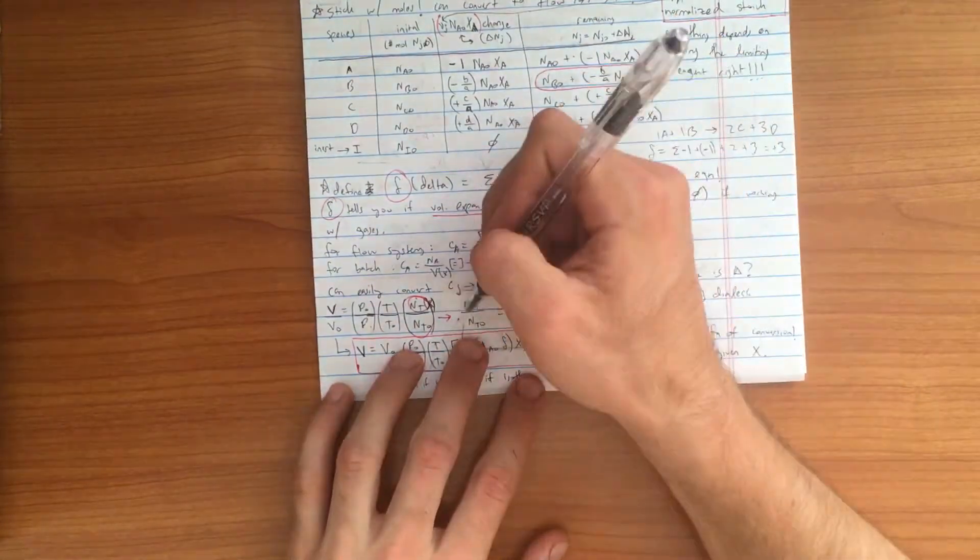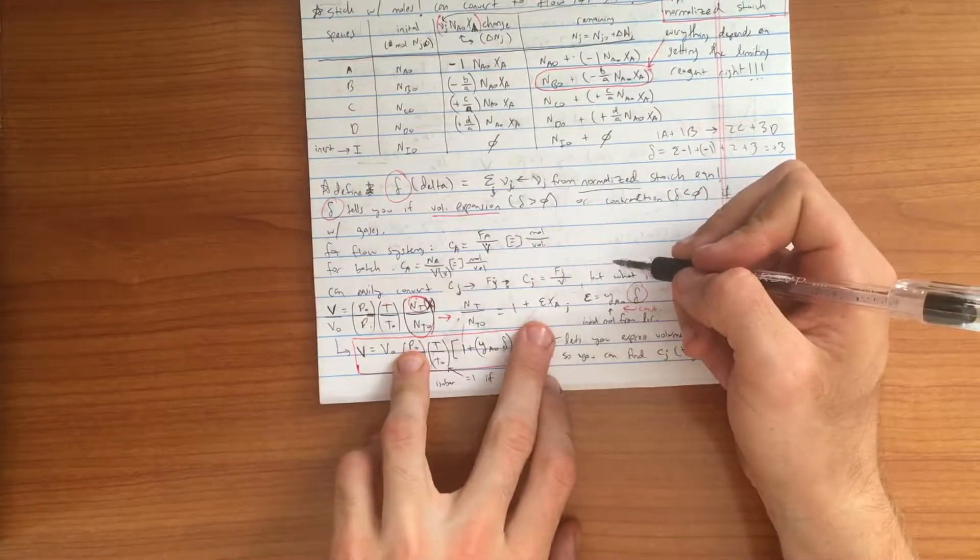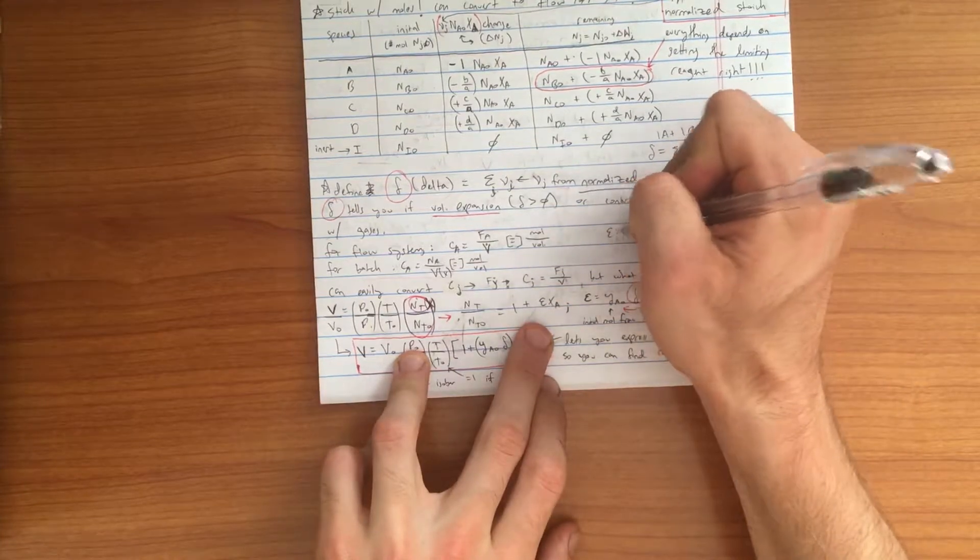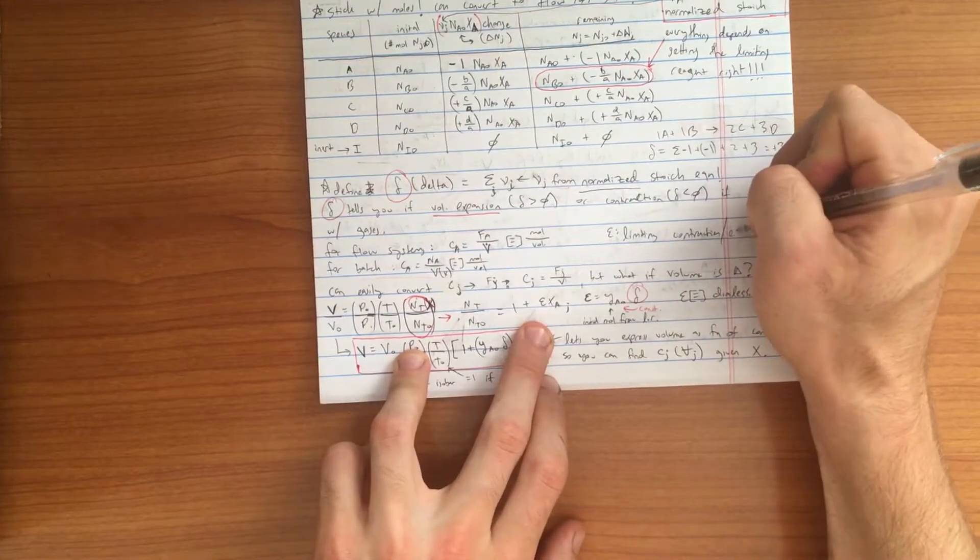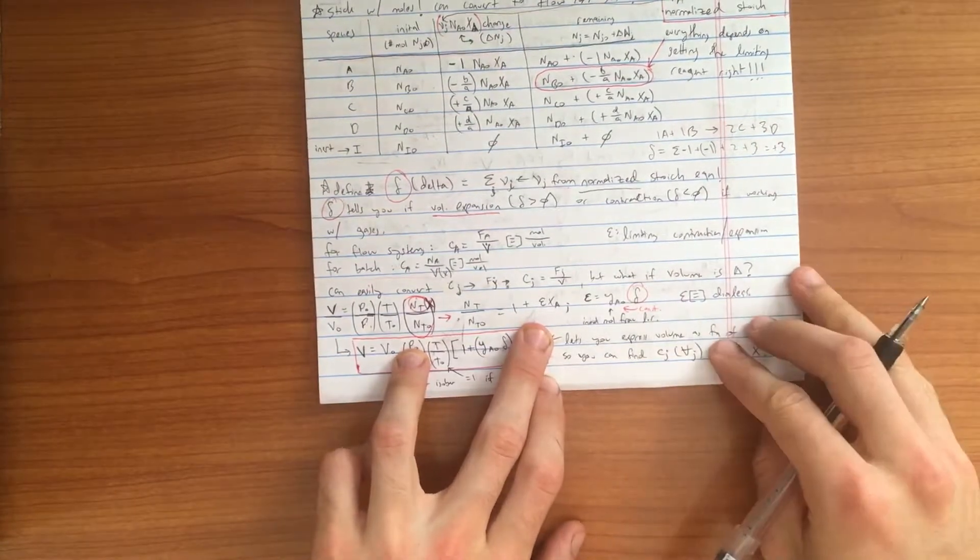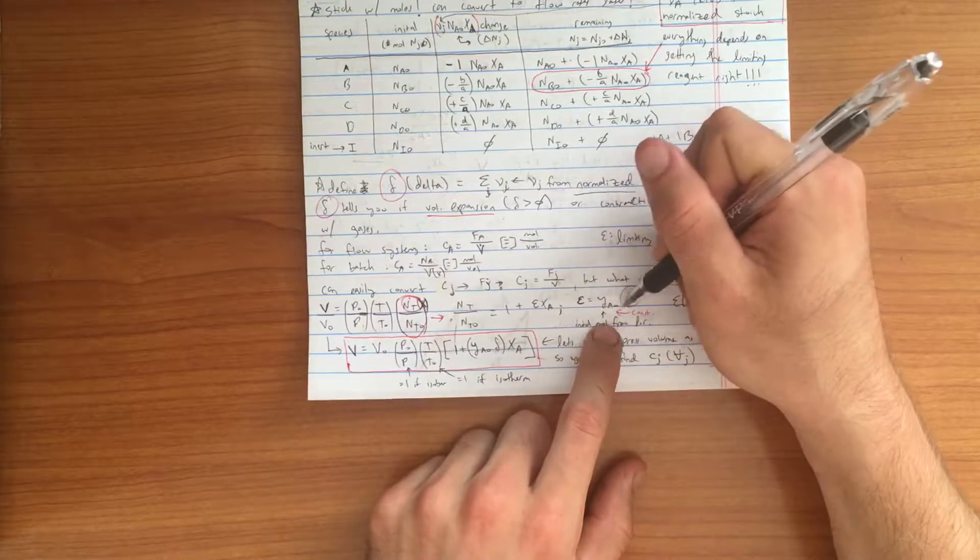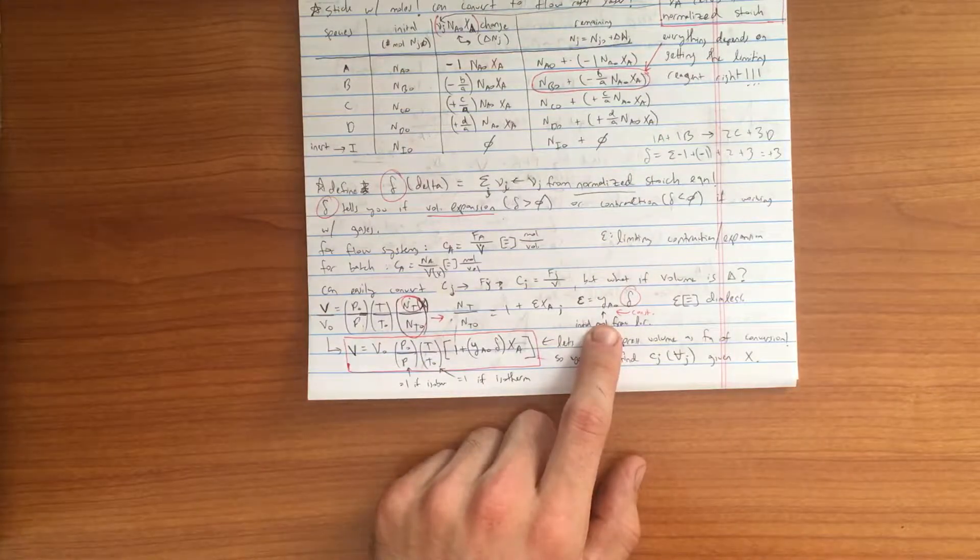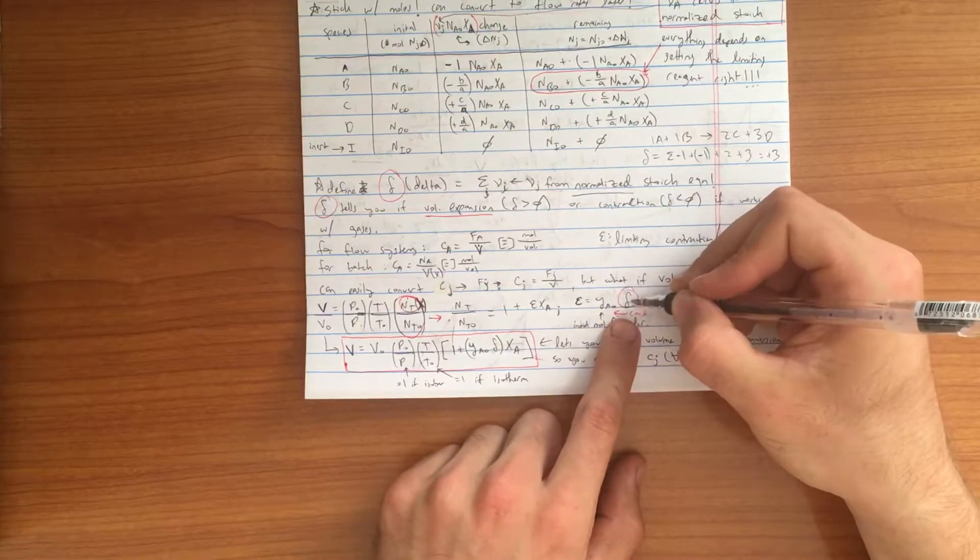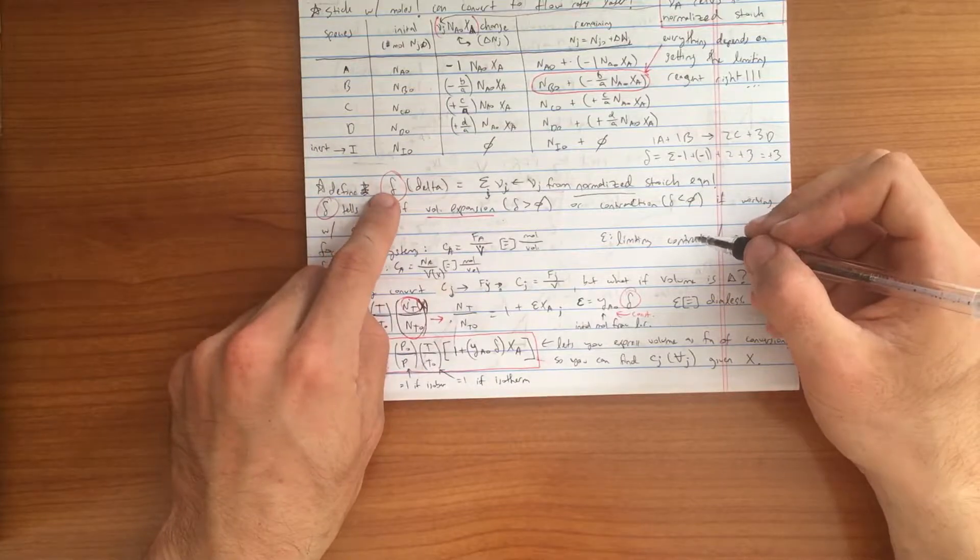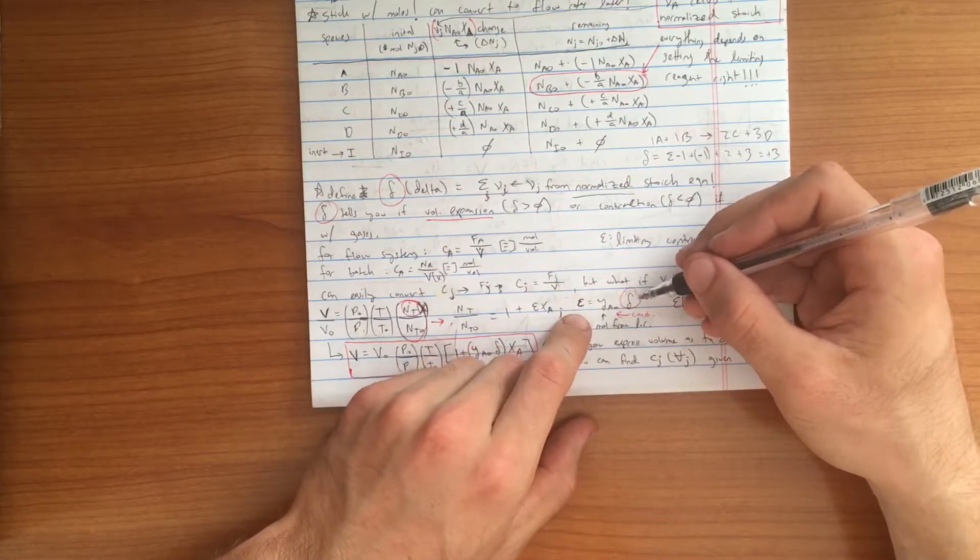We can further simplify this based on this relationship if we define a new variable called epsilon. Epsilon is referred to as the limiting contraction or expansion. Epsilon is defined to be the, this y sub a naught tells us what the initial molar ratio is, so it's a dimensionless number, and it is constant, times delta value, so the delta value you calculated up here. It is important to note that delta is also a dimensionless number, so epsilon must also be dimensionless.